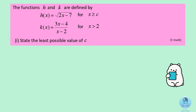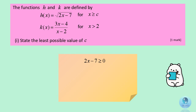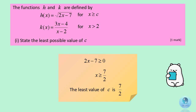To find the least value of c, let 2x minus 7 be greater or equal to 0, because this is a square root function. So x is greater or equal to 7 over 2. Hence, the least value of c is 7 over 2.